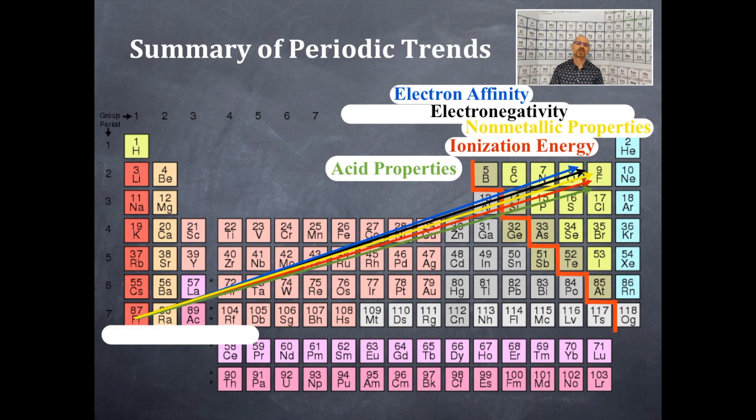So the one that doesn't, that is opposite all these, is atom size and ion size. Notice that that arrow is going in the opposite direction, and that is going down and to the left. So make sure you know those basic patterns of the periodic table.